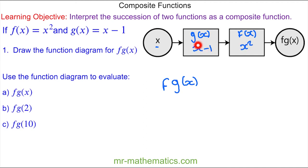This function x minus 1 goes into the x squared. So we have x minus 1, which is this bit here, and then we are squaring it. So this is the function f g of x in terms of x. We could expand the bracket if we wanted to, but at this point it is not necessary.